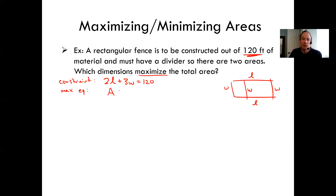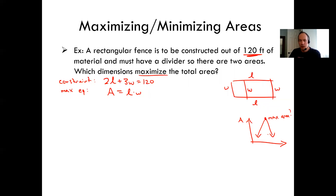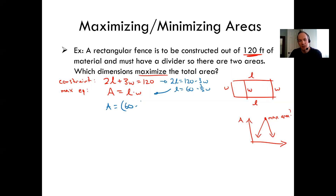The equation we want to maximize is area equals length times width. I want to reduce this to one variable. Isolating L from the constraint: two L equals 120 minus three W, so L equals 60 minus three-halves W. Substituting into the area equation: area equals (60 minus three-halves W) times W. Now I have the equation in terms of W only.